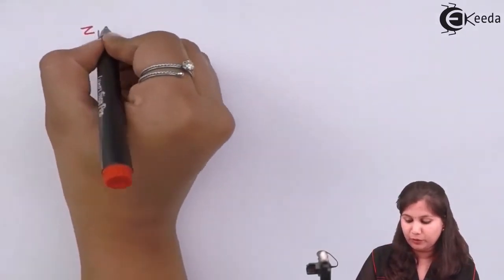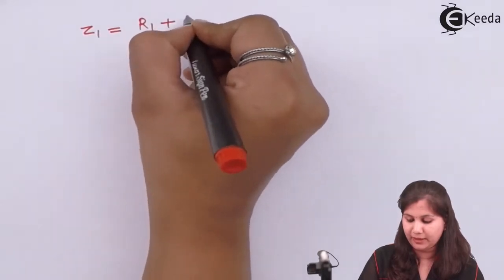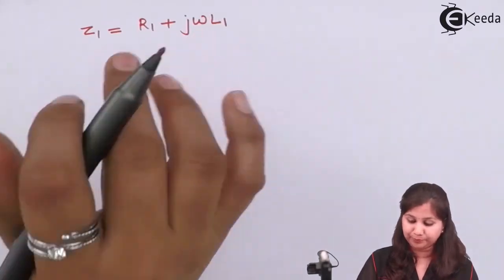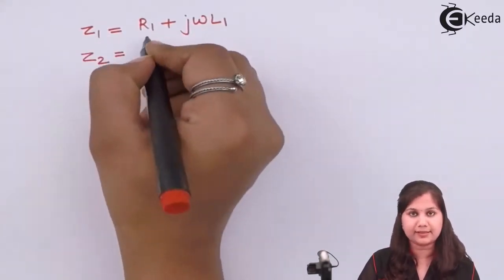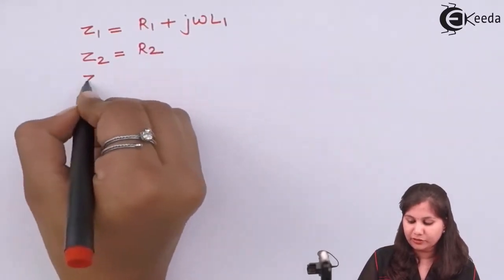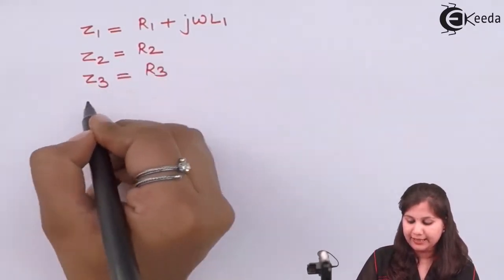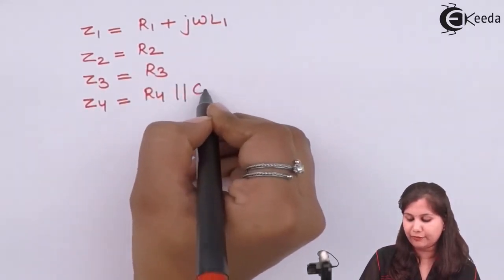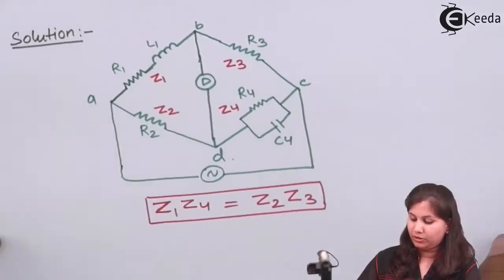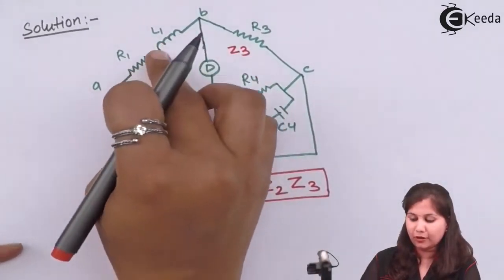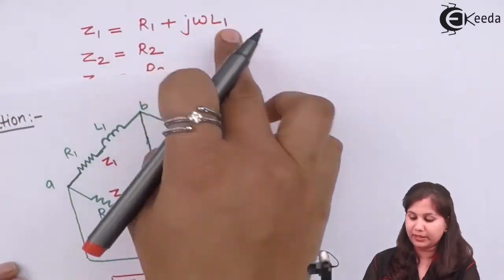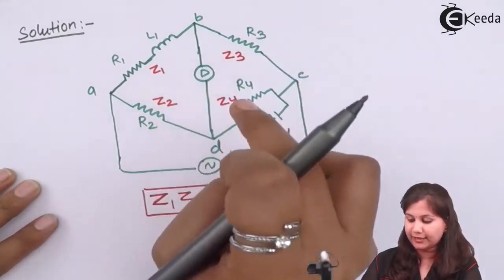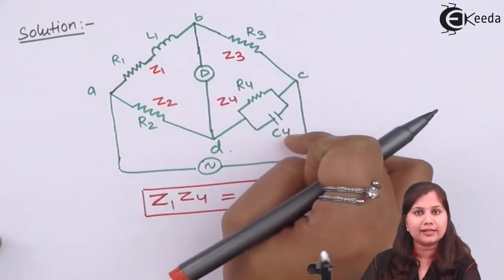Z1 is the series combination of R1 and L1, so Z1 equals R1 plus jωL1. Z2 is the resistance only, that is R2. Z3 is also the resistance R3. And Z4 is the parallel combination of R4 and C4.